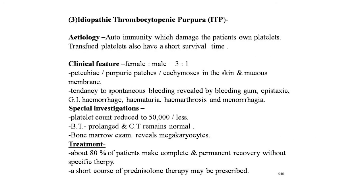The third condition is Idiopathic Thrombocytopenic Purpura (ITP). Etiology: autoimmunity damages the patient's own platelets; transfused platelets also have a short survival time. Clinical features: female to male ratio is 3:1; petechiae or purpuric patches or ecchymosis in the skin and mucous membranes; tendency to spontaneous bleeding revealed by bleeding gums, epistaxis, GI hemorrhage, hematuria, hemarthrosis, and menorrhagia. Platelet count reduced to 50,000 or less; bone marrow exam reveals megakaryocytes. About 80% of patients make complete recovery; prednisolone therapy may be prescribed.